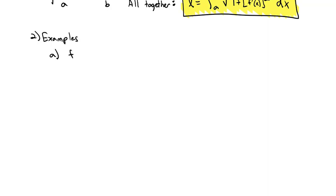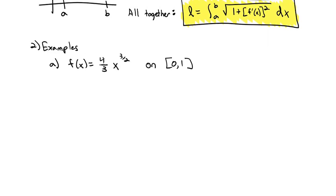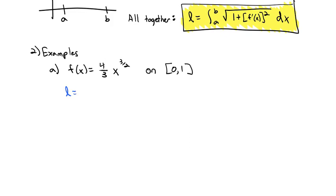Starting with f(x) equals 4/3 times x to the 3/2, and we're going to find its arc length between 0 and 1. Our formula says that arc length is going to be the integral from 0 to 1 of the square root of 1 plus the derivative squared.